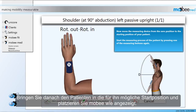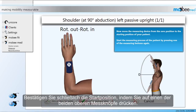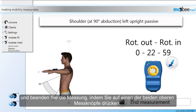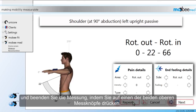Afterwards, bring the patient into the starting position possible for him and place Mobi on the patient as indicated by the software. Finally, confirm the starting position by pressing one of the measuring buttons on top of the device. As you can see, the measurement starts at 22 degrees. Now you can guide the patient through the movement and end the measurement by pressing one of the measuring buttons on top of the device.